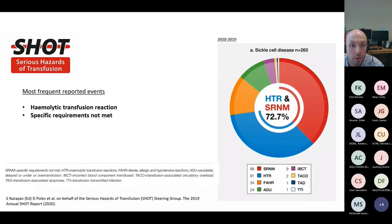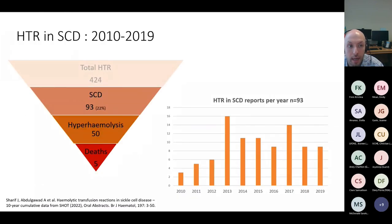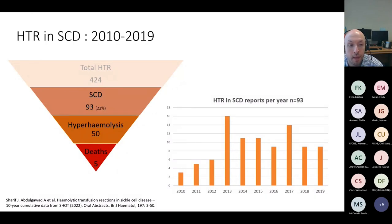Between 2010 and 2019, the most commonly reported events are hemolytic transfusion reactions and specific requirements not being met, and there is overlap between these two categories as one often leads to the other. Over the last ten years, there were 93 hemolytic transfusion reactions in sickle cell patients — 22% of all hemolytic transfusion reactions reported. There were 50 cases of hyperhemolysis in sickle cell, representing 92% of all hyperhemolysis cases reported to SHOT, and five deaths related to hemolytic transfusion reactions in sickle cell.